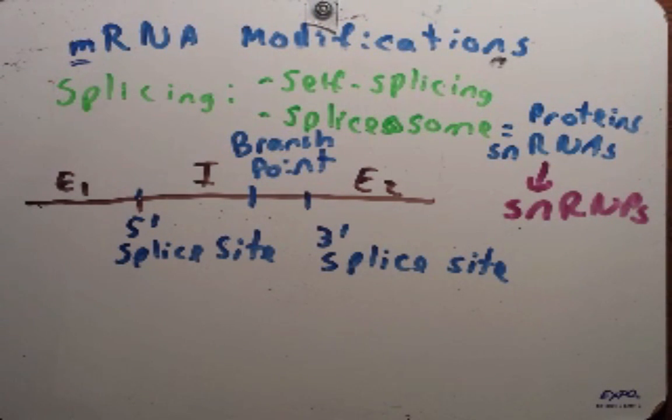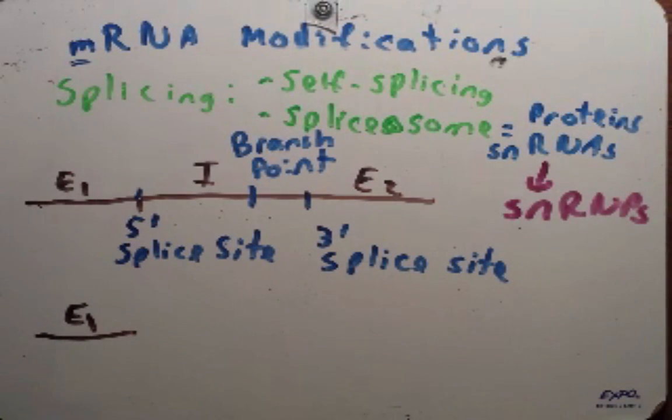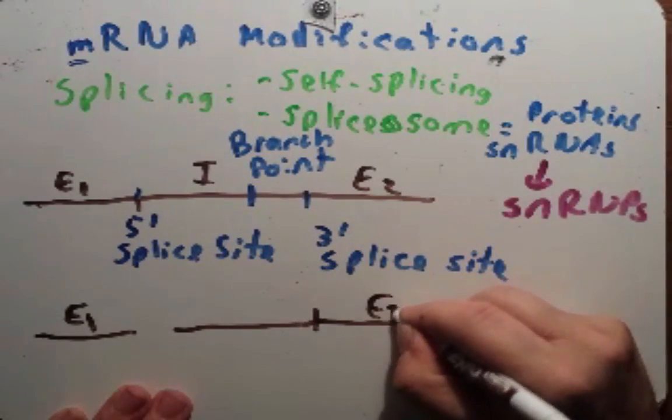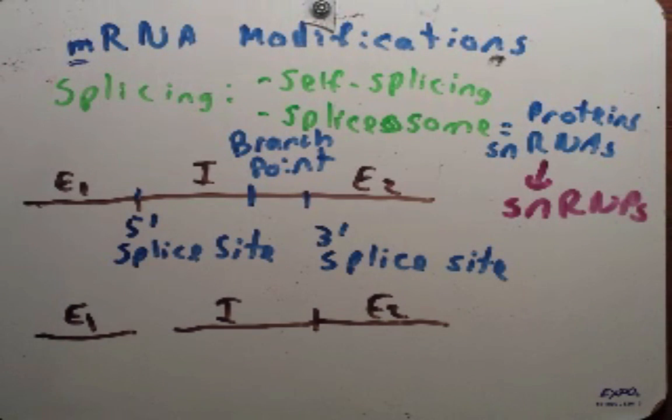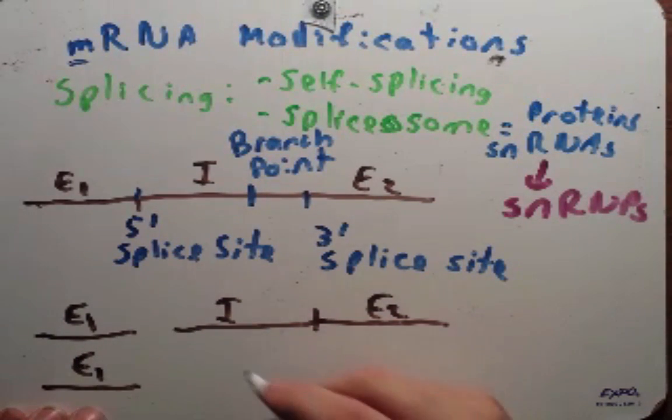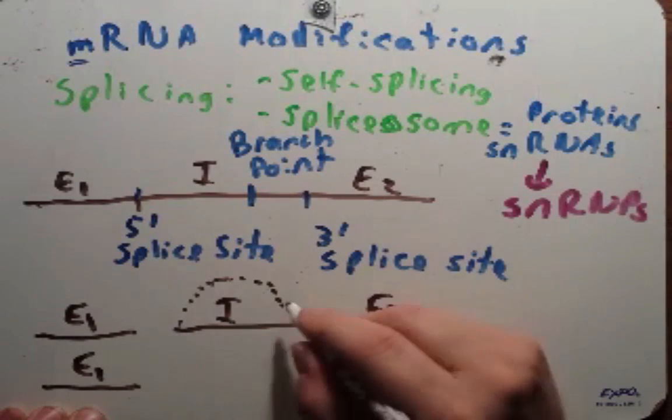So the first thing that happens is that the 5' splice site is cleaved. So you have this exon 1, and over here this intron and exon 2 are attached. Now they aren't just free floating in the nucleus. Rather they are being held in place by the spliceosome. The next thing that happens is that as this exon 1 is just waiting for the rest of it to happen, this intron, this 5' end of this intron, comes over and hits this branch point.